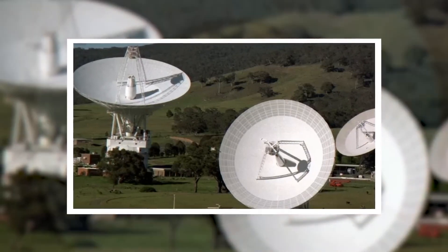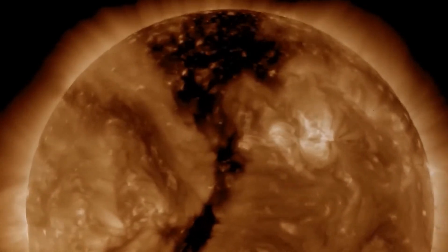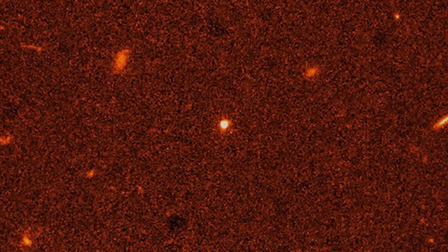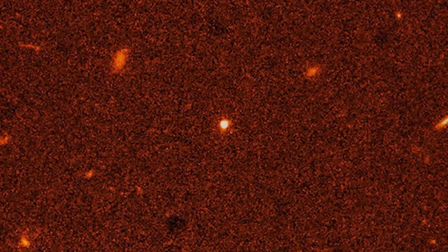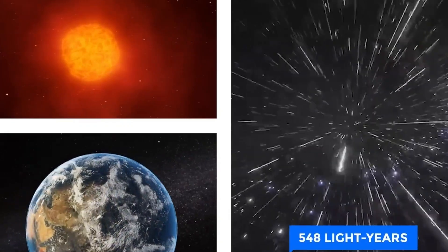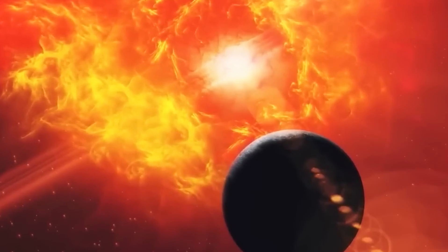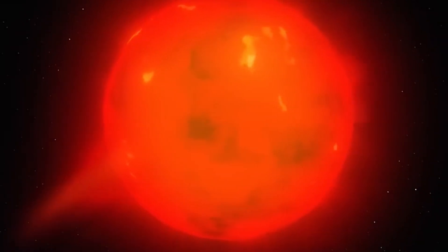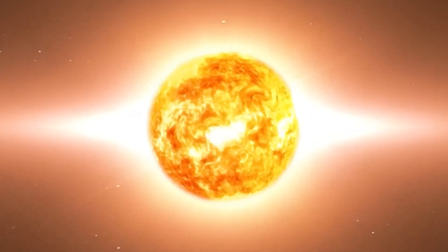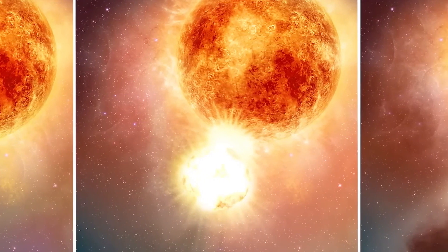To fully comprehend the enigma surrounding Betelgeuse, it is crucial to revisit the end of 2019 when peculiar phenomena began to manifest. During this period, the red supergiant star started experiencing significant dimming, a change noticeable even to the naked eye. Observations using the very large telescope in the optical spectrum revealed that Betelgeuse appeared roughly symmetrical, but its photospheric layers exhibited signs of a substantial disturbance. The photosphere represents the outer layer of the star, where light is emitted.